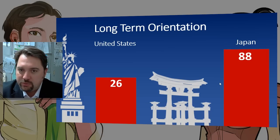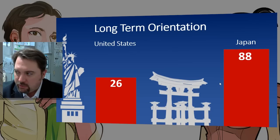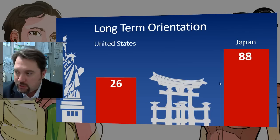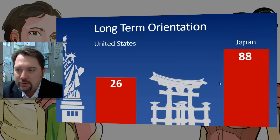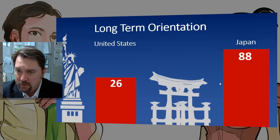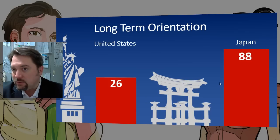Americans are more concerned with the quarterly report and the election cycle, while Japan is more concerned with what's going to happen in the long run. This might also be connected to the age of these two societies.